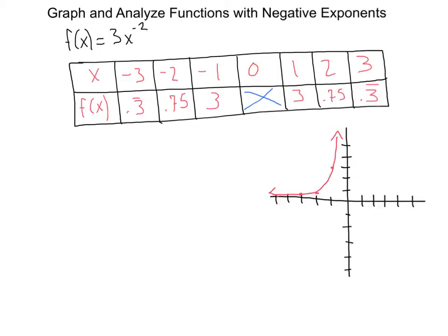Here we have 1.3, we've got 2.75, we've got 3.3, and it looks like we're going to have the mirror of that shape right over here on the positive side. So here we have our graph.